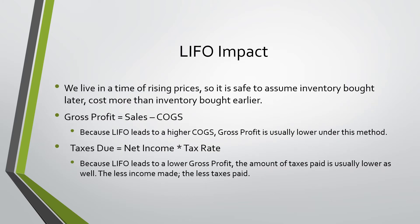LIFO impact. We live in a time of rising prices, so it is safe to assume inventory bought later costs more than inventory bought earlier. Gross profit equals sales minus COGS. Because LIFO leads to a higher COGS, gross profit is usually lower under this method. Taxes due equals net income times the tax rate. Because LIFO leads to a lower gross profit, the amount of taxes paid is usually lower as well. The less income made, the less taxes paid.